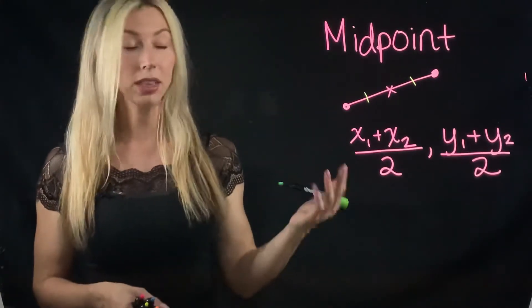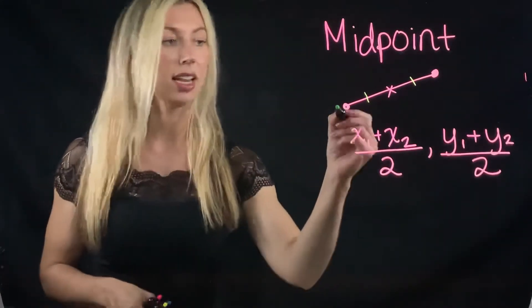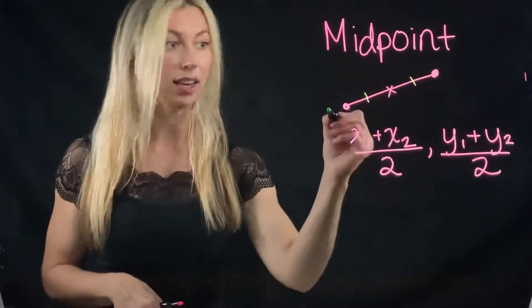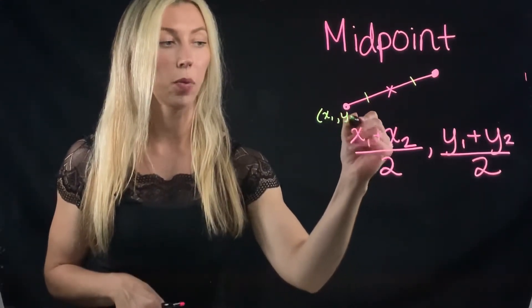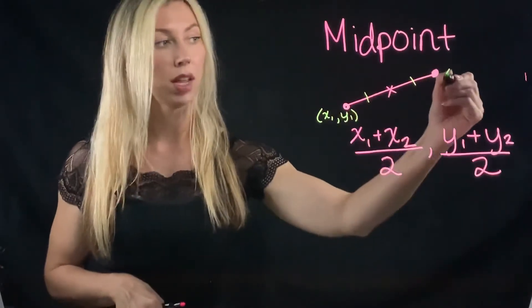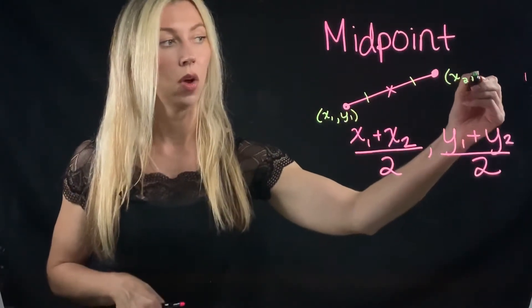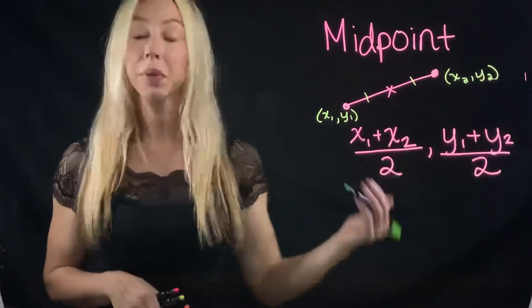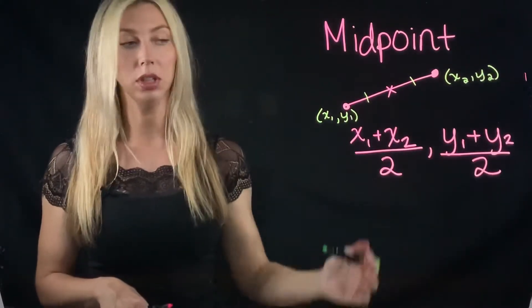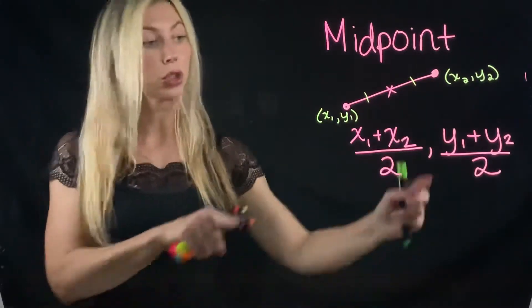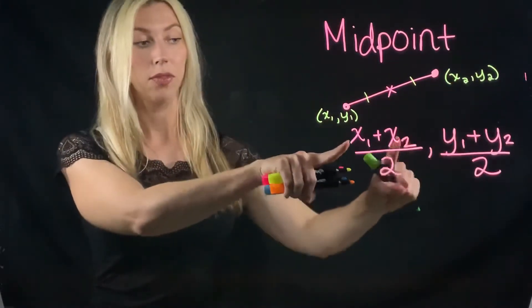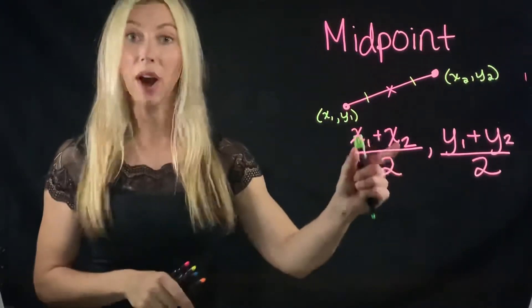The formula for the midpoint is to simply take the coordinates on either end and we'll call this one x1, y1 and we'll call this one x2, y2. It really doesn't matter which one you label x1, y1 or x2, y2 as long as you're using the x's from both of the points and you're averaging them.